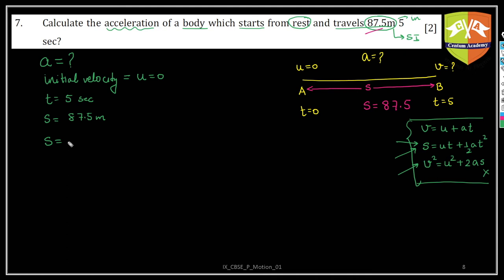So s equals ut plus half a t squared is the equation to be used here. It need not be that straightforward every time, but here in this case it's very simple so you can always use that approach. But if there are more intricacies involved, you have to break down the problem into multiple parts and apply these motion equations individually. We'll take those kind of problems also, not now.